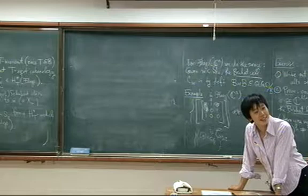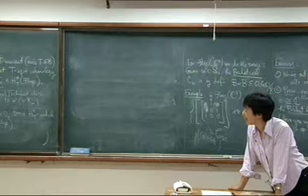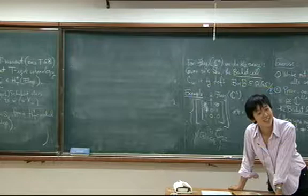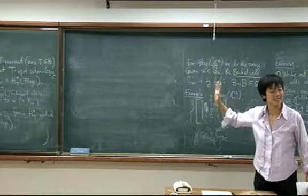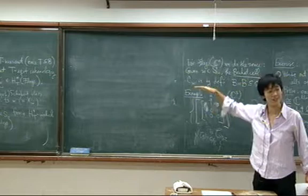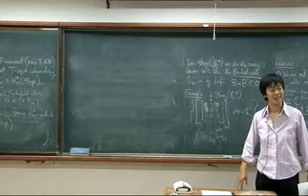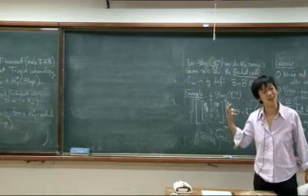The Schubert varieties should give an ordinary cohomology basis. And now, as long as you know that HT flags, that the Leray-Serre spectral sequence degenerates, and that HT flags is nothing else than HT point tensor the ordinary cohomology, then, because the equivariant Schubert class, the equivariant piece is just coming along for the ride. So these should also give a module basis over the equivariant cohomology of a point.